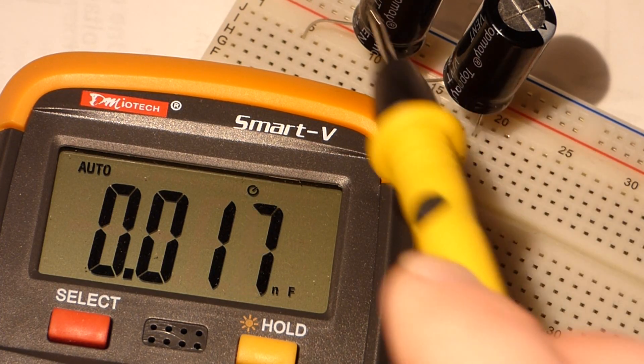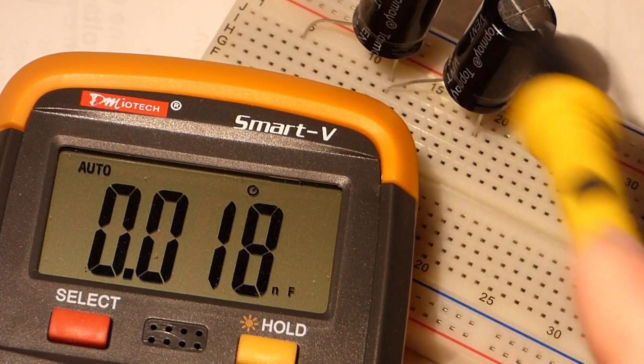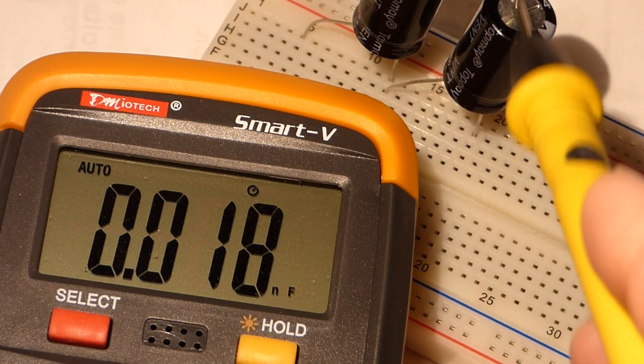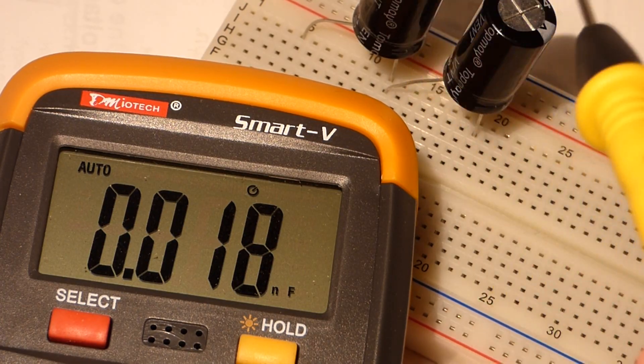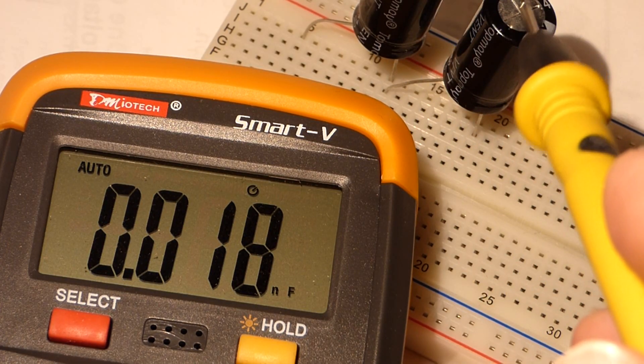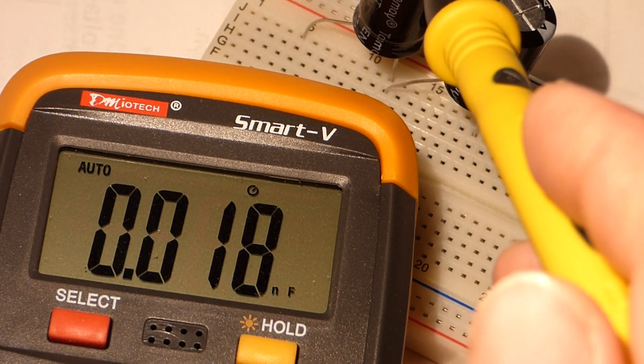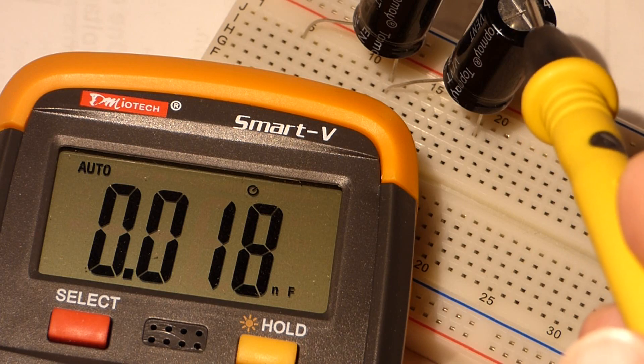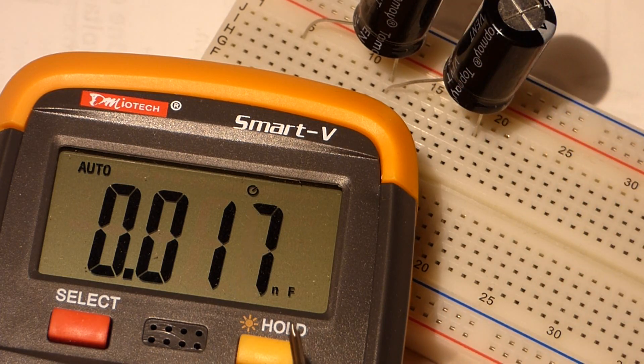And so whenever you charge series capacitors, the current goes through both of them equally. These are equal sized capacitors, so the math works out really easy. As I mentioned, these are rated for 470, but when you average out these two, they're about 480 microfarad.